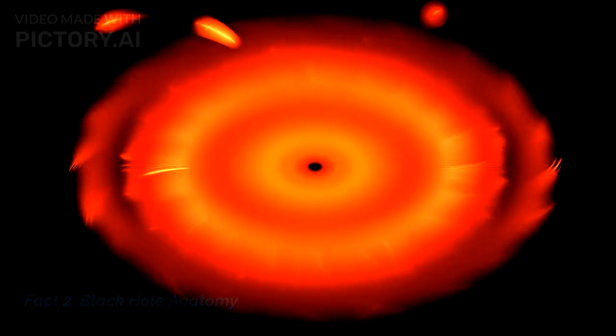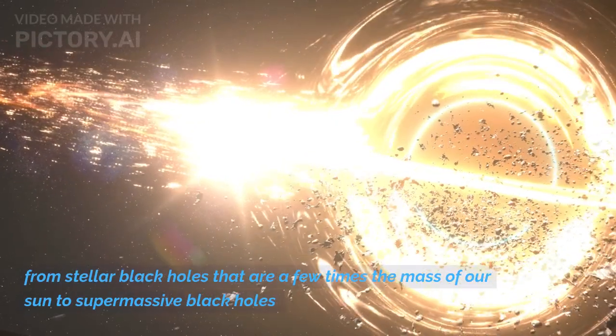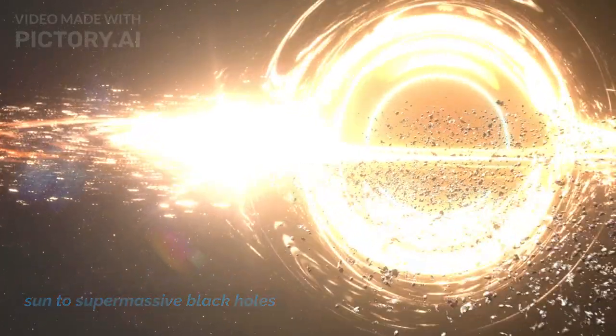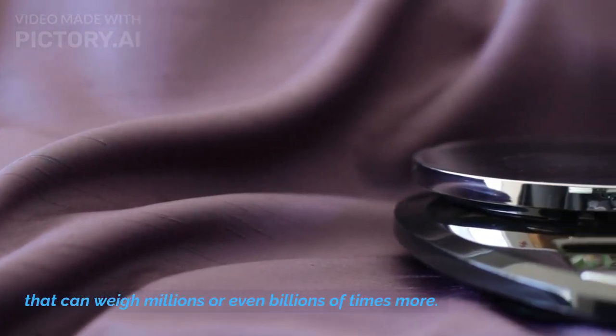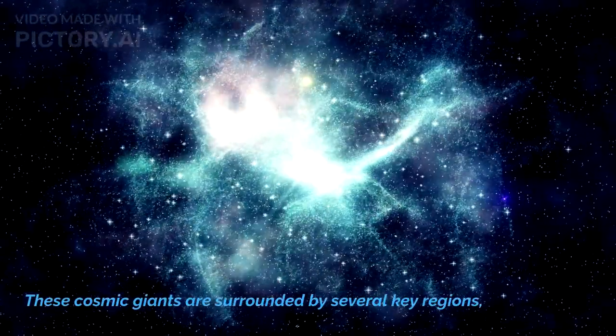Fact 2: Black Hole Anatomy. Black holes come in various sizes, from stellar black holes that are a few times the mass of our sun to supermassive black holes that can weigh millions or even billions of times more. These cosmic giants are surrounded by several key regions.